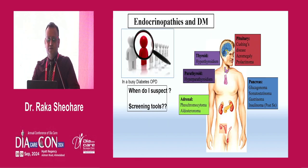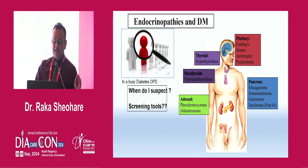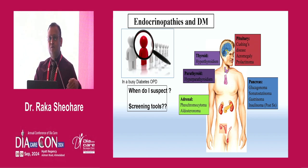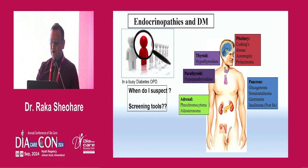When do I suspect endocrinopathy in a busy diabetes clinic? We should apply a high degree of clinical suspicion rather than treating patients in a sugar-centric way. Take a deep dive to see whether secondary factors are contributing. You need to examine the master endocrine system: pituitary for Cushing disease, acromegaly, prolactinoma; pancreas for pancreatic tumors; parathyroid for hyperparathyroidism; thyroid for hyperthyroidism; and adrenal for pheochromocytoma or aldosteronoma.